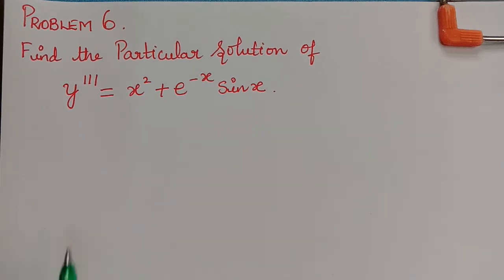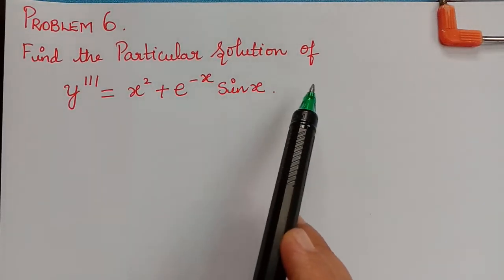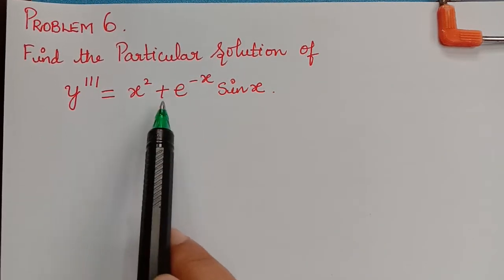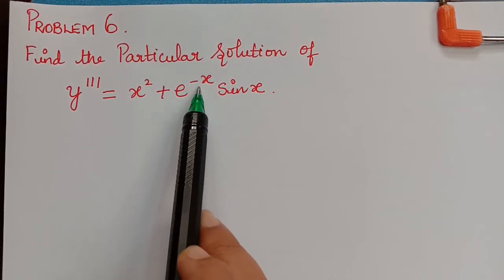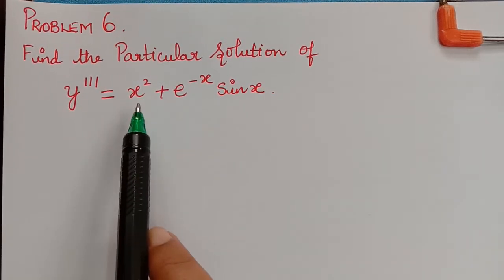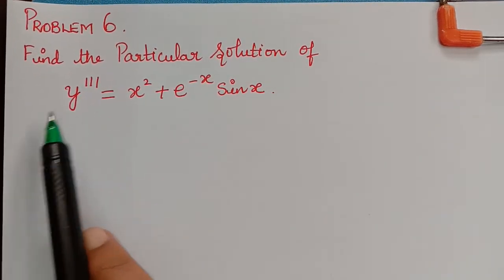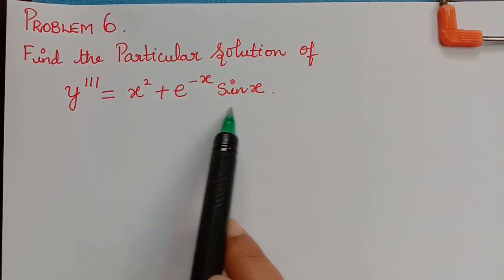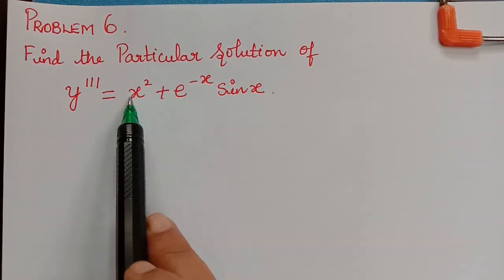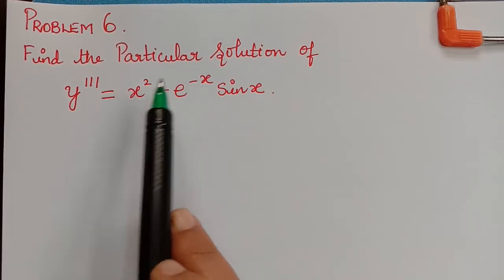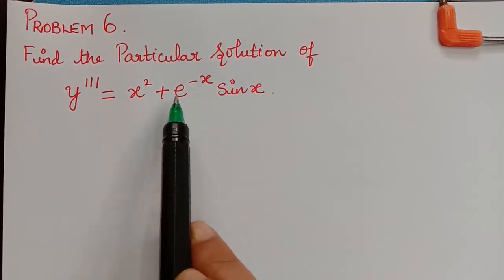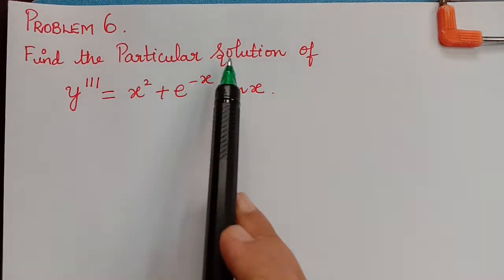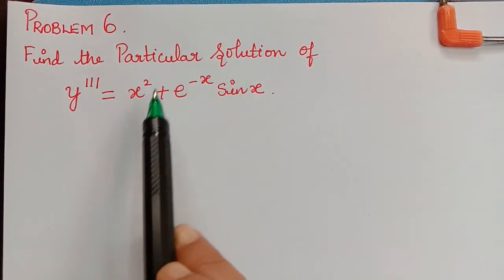Hello students. Let us find the particular solution of y''' = x² + e^(-x)sinx. The difference between this problem and the previous problems is that the right-hand side is a sum of two functions, and one of those functions is a product of two functions. So in such a case, let us see how to find the particular solution.